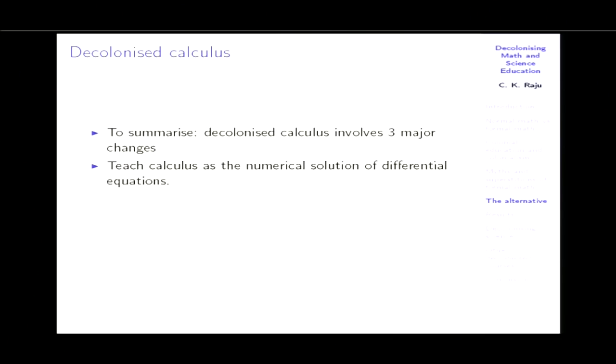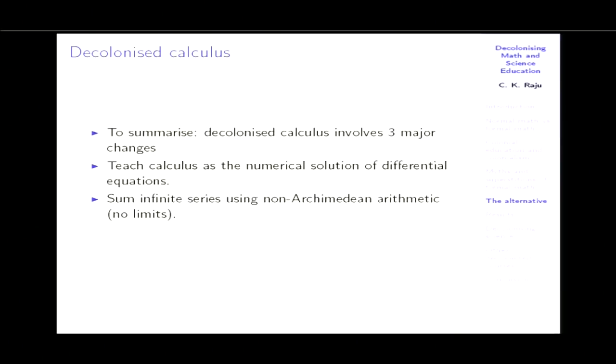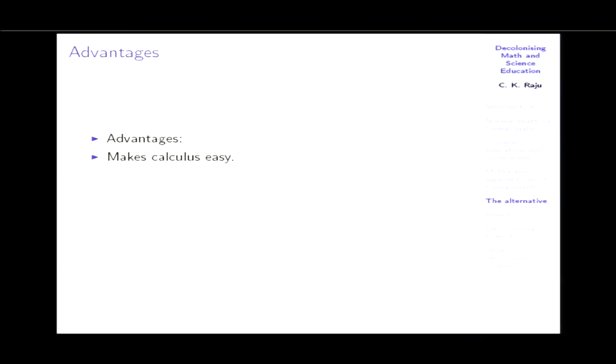To summarize: decolonized calculus involves three major changes. First, teach calculus as the numerical solution of differential equations and summation of infinite series using non-Archimedean arithmetic — calculus without limits. Second, teach zeroism, a philosophy of inexactitude. The advantages are that it makes calculus very easy, provides conceptual clarity, gives students the ability to solve harder problems such as elliptic integrals, and leads to better science and better science teaching.